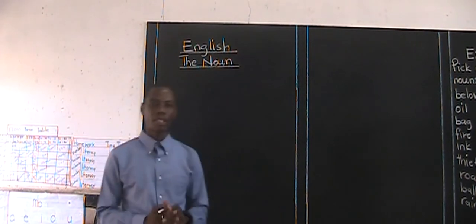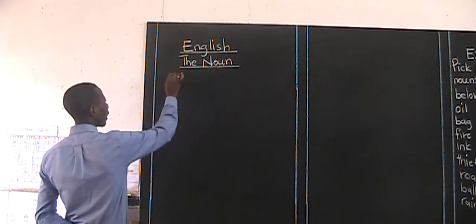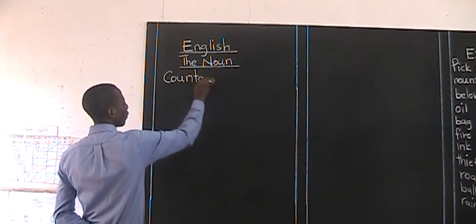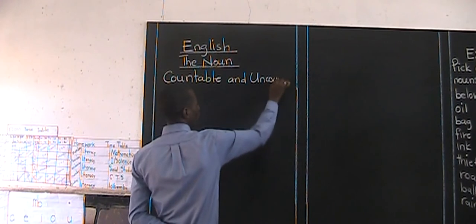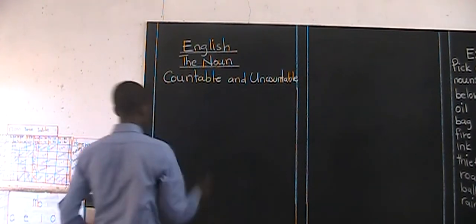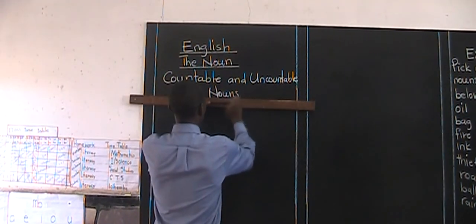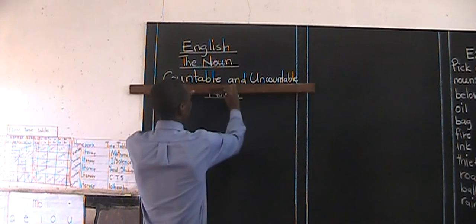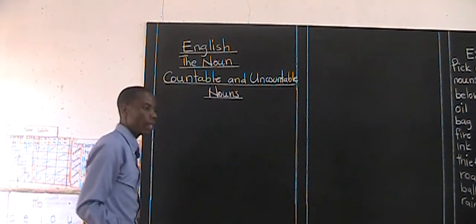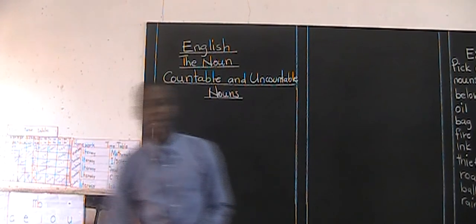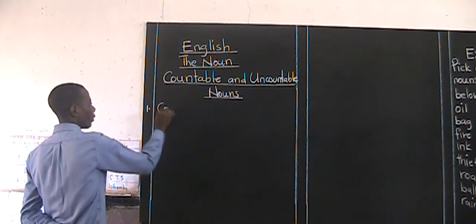Today, I want us to look at something different but still falling under nouns. Today I want us to look at what we are calling countable and uncountable nouns. Countable and uncountable nouns are other types of nouns. We will begin with countable nouns.